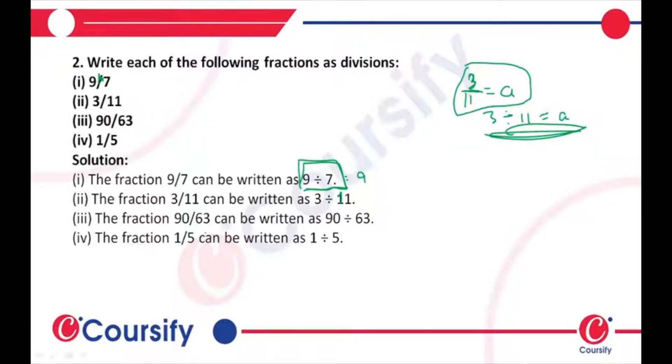Next question: the fraction 90 by 63 can be written in the form of 90 divided by 63. Please replace 90 by 63 with the division operator. So we get the answer: 90 divided by 63.